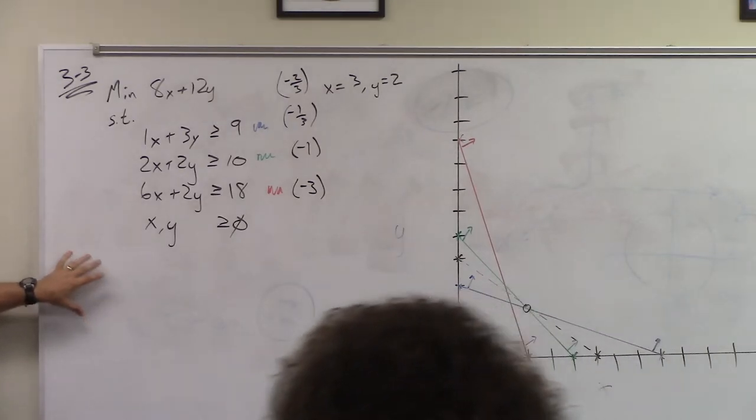What's the slope of this one? Negative 1 third. This one? Negative 1. And this one? Negative 3 because it's 6 over 2. And so if we now order these by slope, what's our smallest slope? Negative 3, then negative 1, then negative 2 thirds, then negative 1 third.